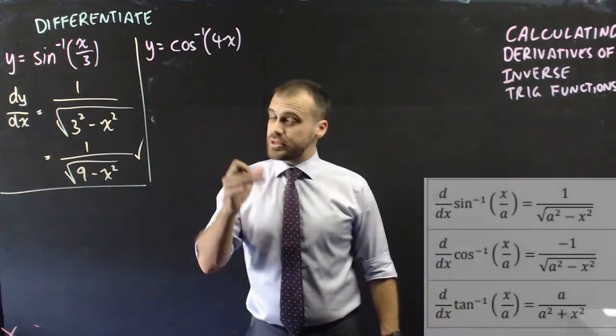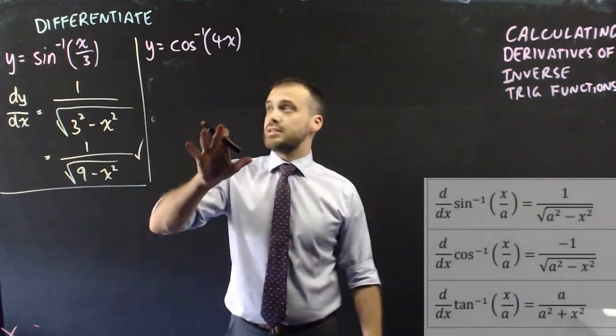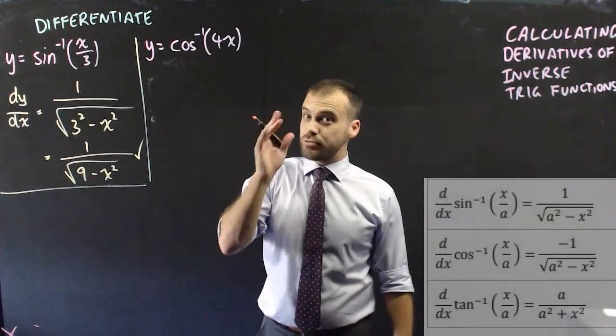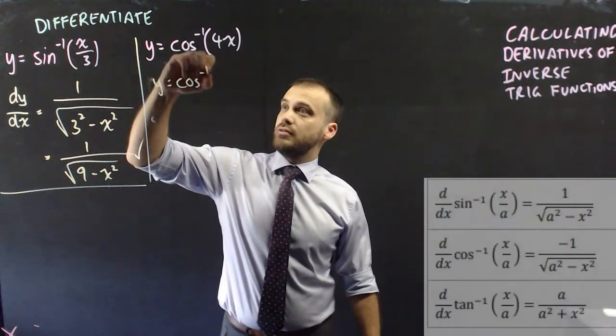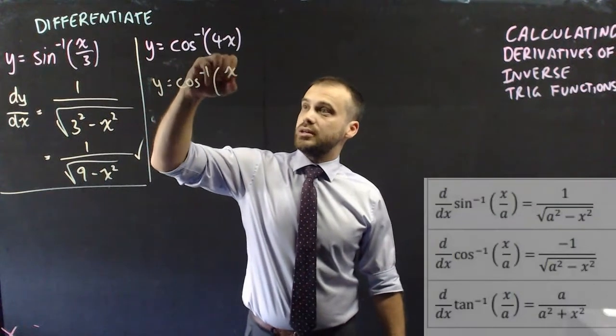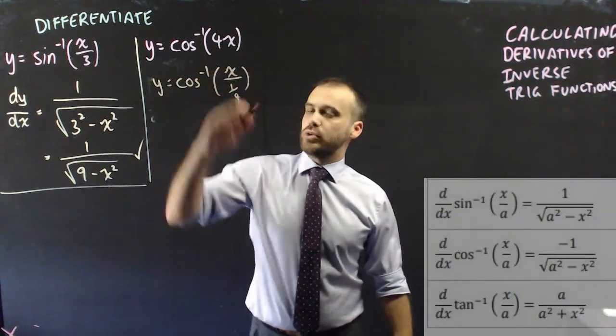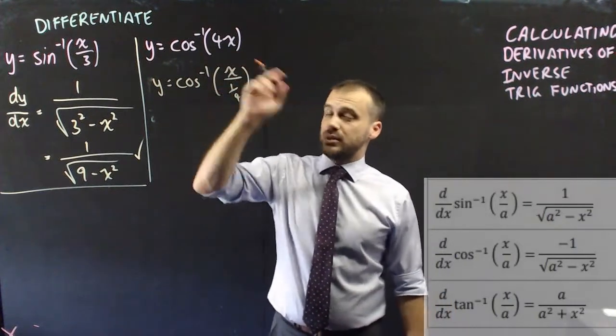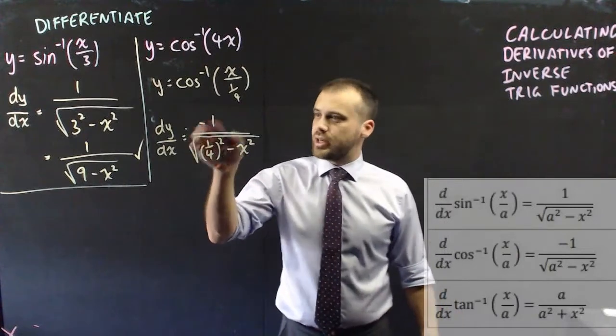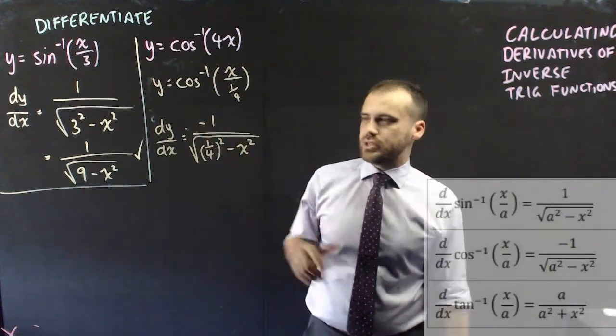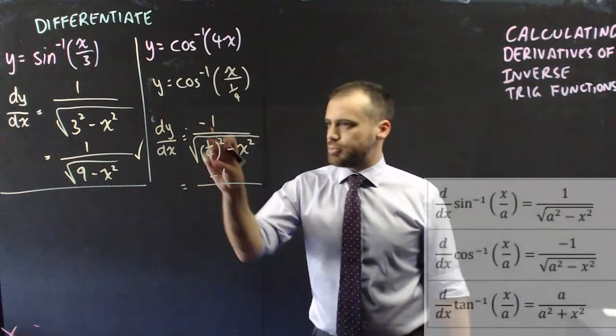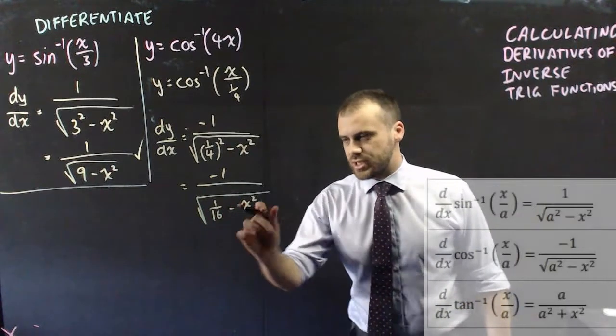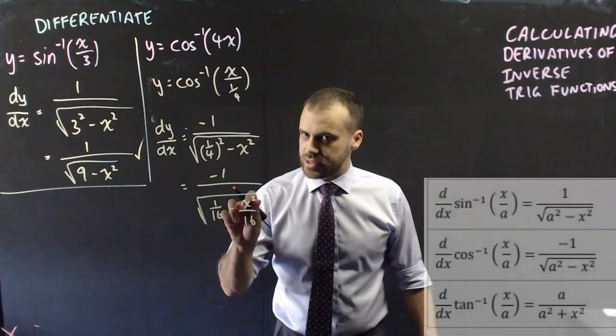So here's our second example and you can do this one two different ways. The first way to see it is to understand that y equals inverse cos 4x can be rewritten as y equals inverse cos x over 1 quarter. And now we can just look at our formula sheet and plug in the a value and the x value. When you do that, you get something pretty ugly, negative 1 over root 1 quarter squared minus x squared. Now you can neaten this up first by squaring that, and then giving this a common denominator of 16.